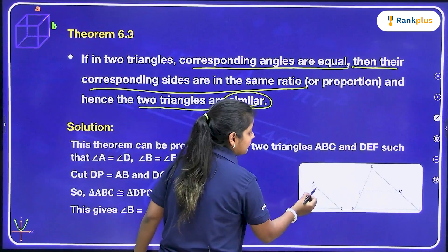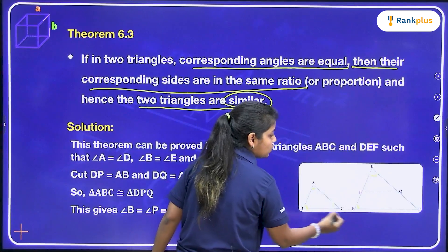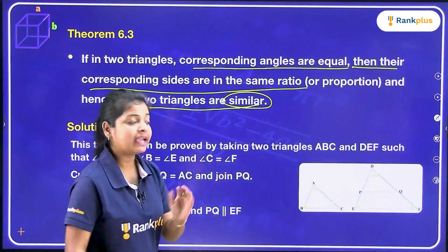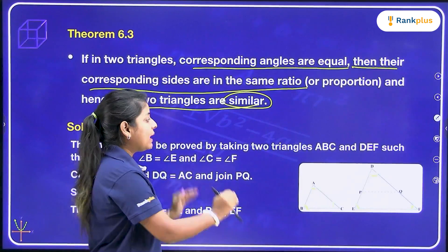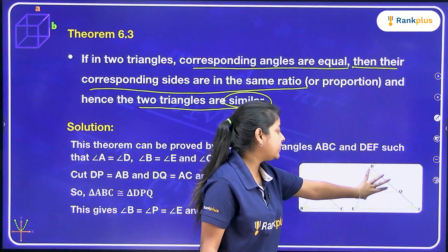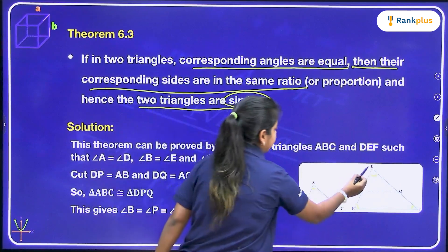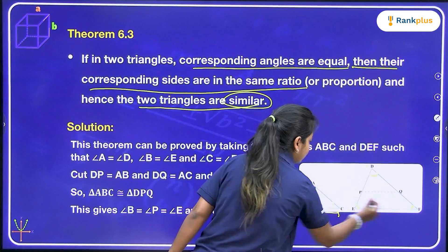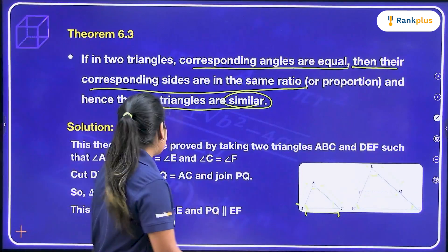It is already given that angle A is equal to angle D, angle B is equal to angle E, and angle C is equal to angle F. Now we have a construction because we have to prove triangles ABC and DEF congruent. So we draw a line PQ dividing D into two parts, where DP is equal to AB, BC is equal to PQ, and AC is equal to DQ.